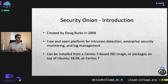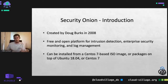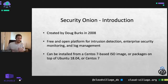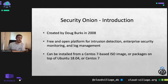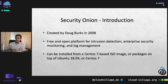Security Onion became this free and open platform for intrusion detection, enterprise security monitoring, and log management. We record traffic off the network, we can also pull in host telemetry, and also perform log management — you can send different types of log data via firewall and other stuff. It can be installed from a CentOS 7 based ISO image, and packages are also available for Ubuntu 18.04 or CentOS 7.